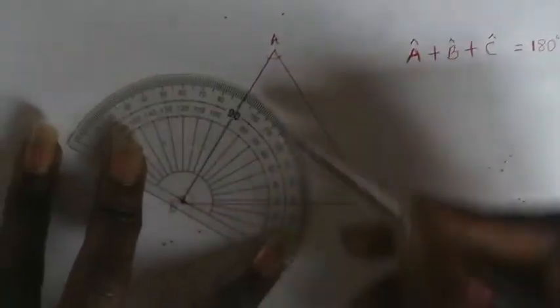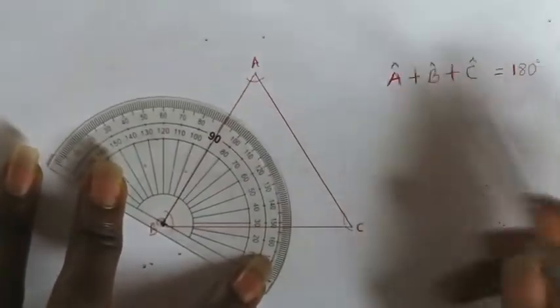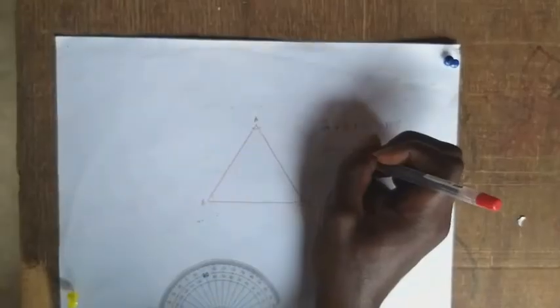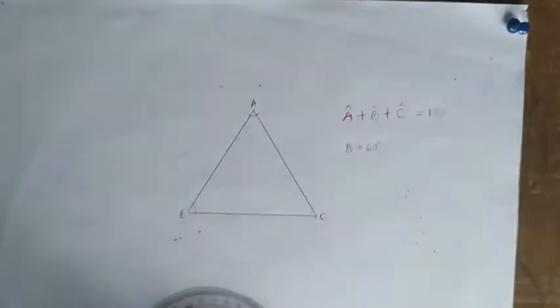10, 20, 30, 40, 50... 63. So angle B is equal to 63 degrees.